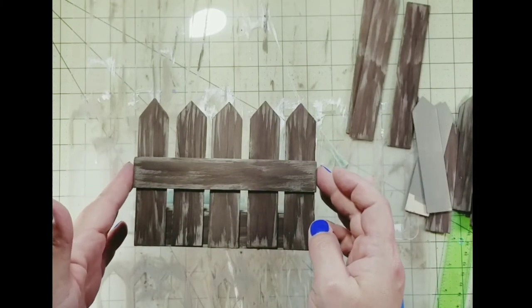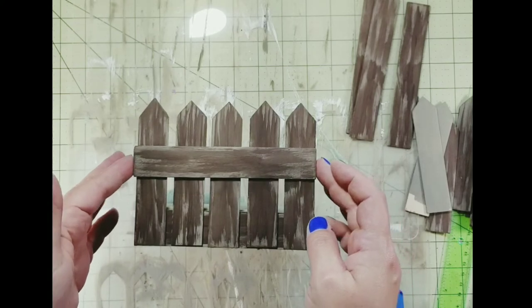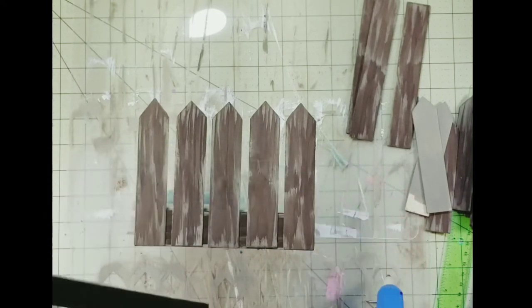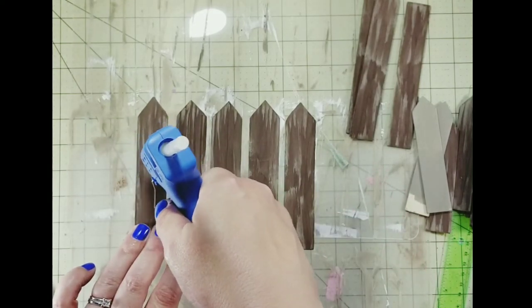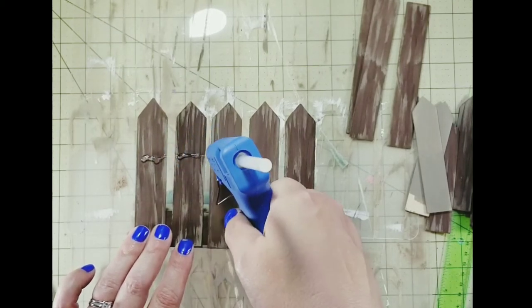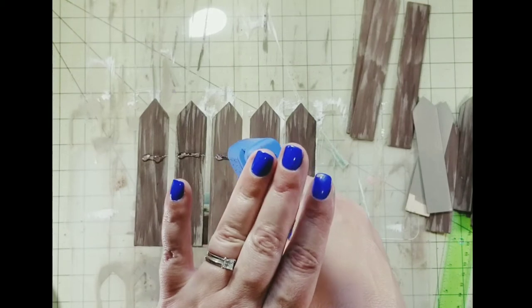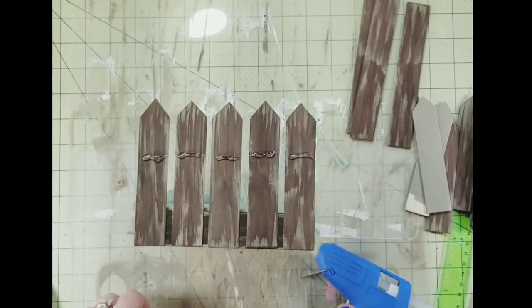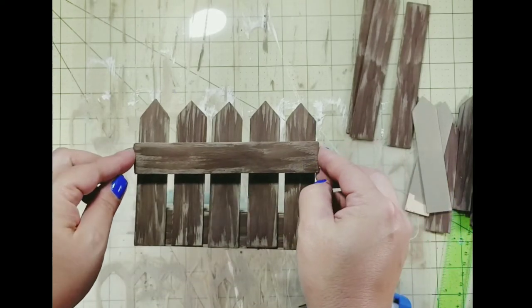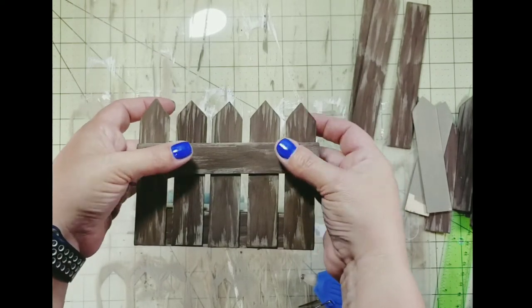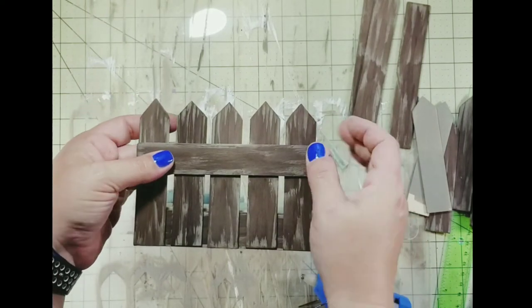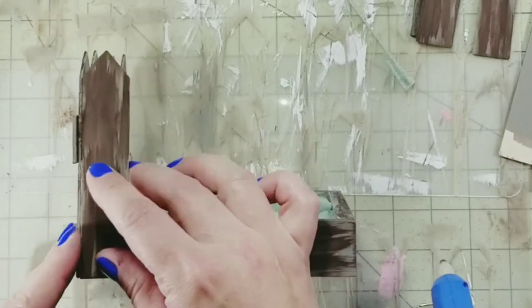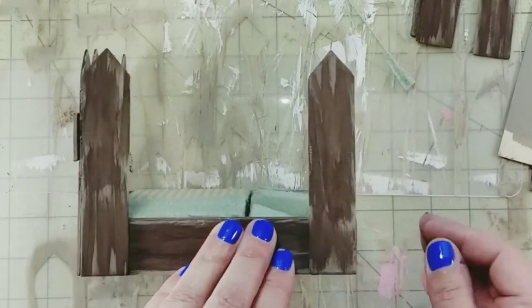Next we're going to add one of those rectangle pieces along the front edge of our picket fence posts. Now you can measure this if you'd like. I just eyeballed it to where I liked it. But all picket fences are different and unique so you make yours however you like it. I just ran a bead of hot glue across the front of all of those sticks and then added that rectangle piece. You're going to do the same thing to the other three sides of your shadow box.